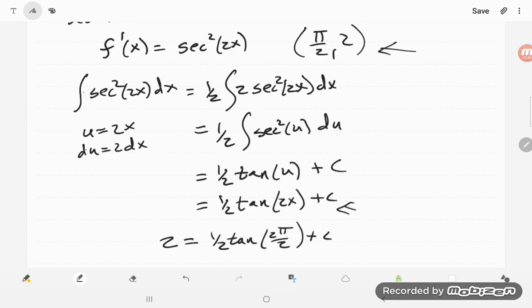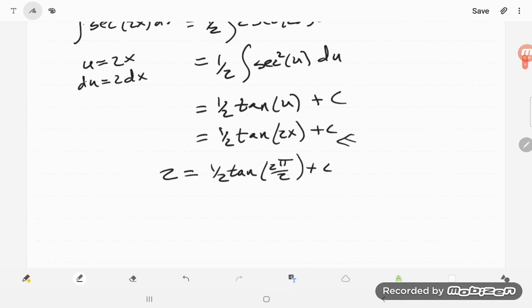Well, let's see, that's tangent of pi. Tangent of pi is 0, so we have 2 equals 0 plus c. So c equals 2.